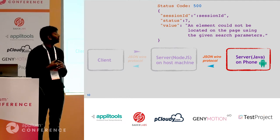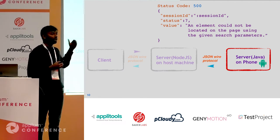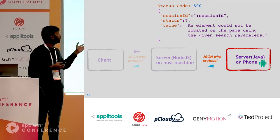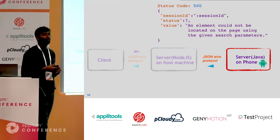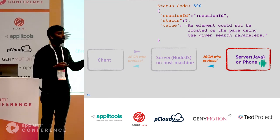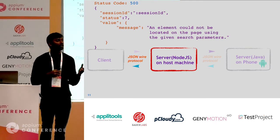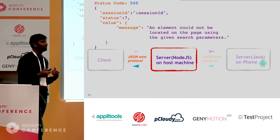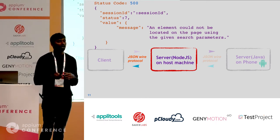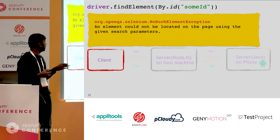If the request fails because the given element is not identifiable on screen, you will get a 500 status code and a JSON response about the operation. The JSON response has a status of 7, which uniquely means 'element not found.' We're not sending the entire information, just the status code. The client decrypts the status code and also receives a string representation of the execution in the value field, plus a session ID to distinguish one session from another. The final outcome is a NoSuchElementException.